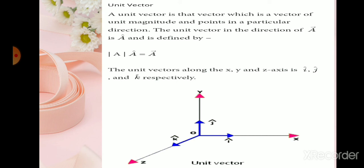The unit vectors along the X, Y, and Z axis are represented by I cap, J cap, and K cap respectively. I cap, J cap, and K cap will be of unit magnitude and they will be directed along the X, Y, and Z axis respectively.